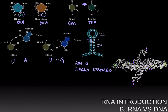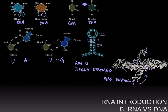RNA can form secondary structures such as the stem loop shown here. The fact that RNA can fold and form these secondary structures means that RNA is similar to protein in that it can work as an enzyme. Since enzymes require complicated structures and shapes to catalyze reactions, RNA, because of its ability to form secondary structures, can work like an enzyme. These RNA-based enzymes are called ribozymes. Here is an example of a ribozyme called the viroid satellite ribozyme that can cleave phosphodiester bonds.